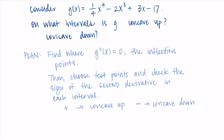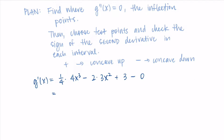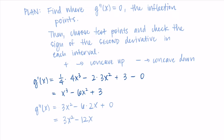Our first step is to find the first derivative. Following the power rule — exponents come in front, the derivative of 3x is just 3, and the derivative of 17 is 0 — I simplify to get g′(x) = x³ minus 6x² plus 3. Then I repeat the process for the second derivative: bring exponents in front, the derivative of 3 is 0, giving g″(x) = 3x² minus 12x.